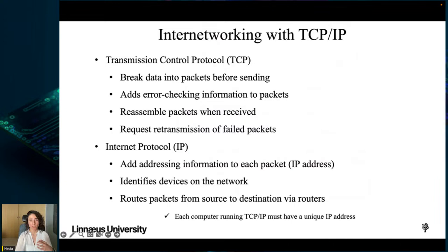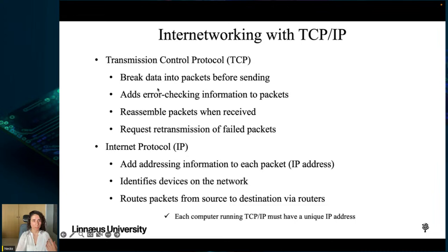In summary, the role of the TCP/IP layer model is to provide a standardized framework for communication over computer networks, with each layer handling specific tasks to ensure reliable and efficient data transfer. TCP (Transmission Control Protocol) breaks data into packets, adds error-checking information, reassembles packets when received, and requests retransmission of failed packets. IP (Internet Protocol) adds addressing information to each packet, identifies devices on the network, and routes packets from source to destination via routers.